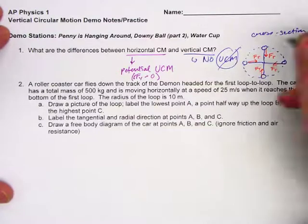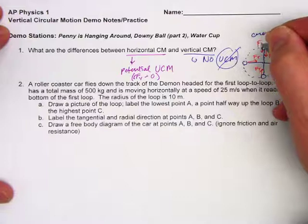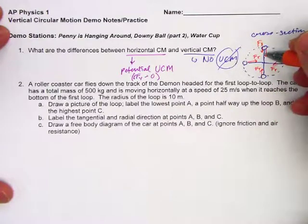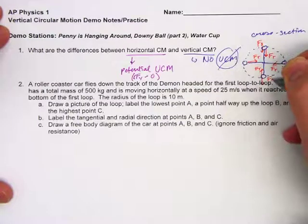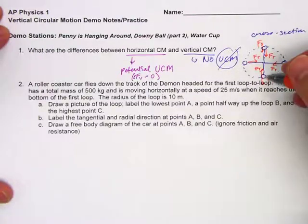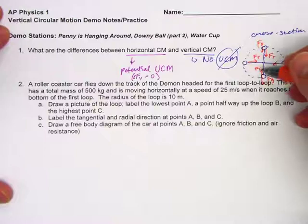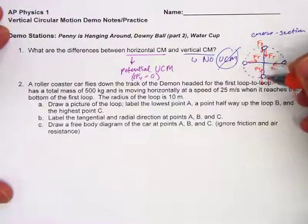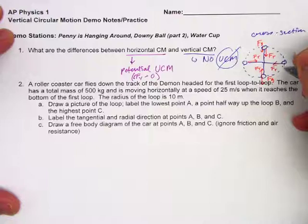But what happens to gravity? At the top, Fg is pointing centripetally inward, because it's always down towards the center of the earth. At the bottom, it's now pointing centrifugally, so outward, away from the center of the circle. So here you have gravity and tension working together to be a centripetal force. Here you have tension and gravity working against each other to provide a centripetal force.